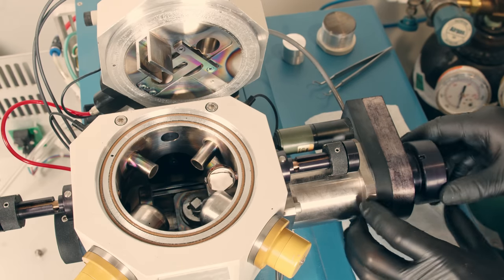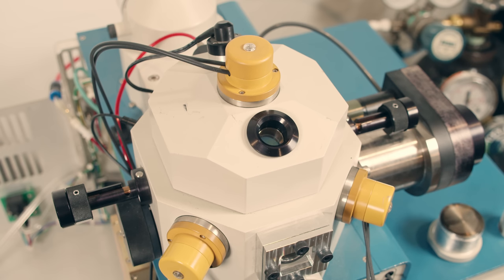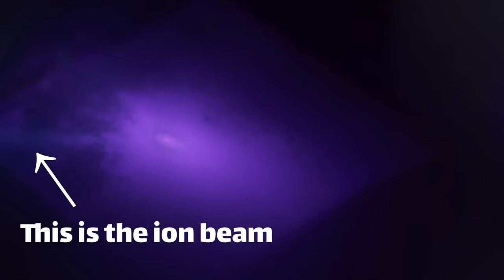The sample is loaded in, and a shield is rotated to temporarily cover the sample. In the top of the chamber is an ion gun, which generates a beam of ionized particles and is responsible for the etching. We'll talk more about the ion gun in just a second.